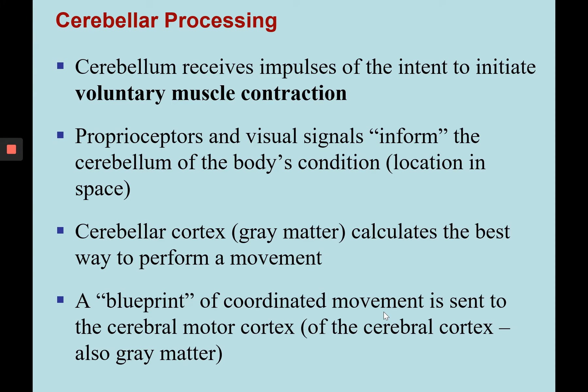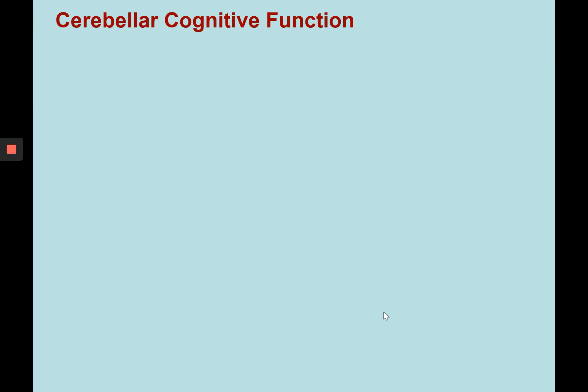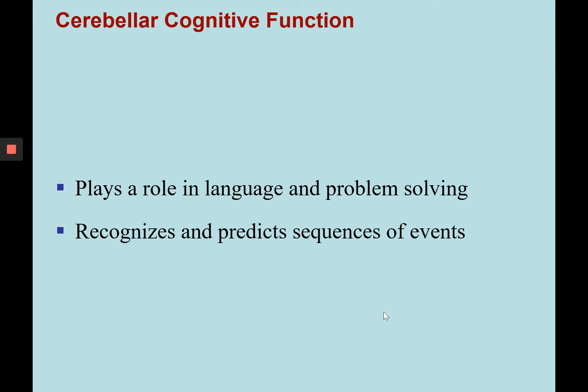Here we're going to briefly talk about cerebellar processing. The cerebellum receives impulses of the intent to initiate voluntary muscle contraction. Voluntary muscle contraction must follow a blueprint of coordinated movement sent to the cerebromotor cortex from the premotor cortex or primary motor cortex. The cerebellar cortex is gray matter located superficially to the deep cerebellar white matter, and this part is able to calculate the best way to perform a movement. The cerebellum also plays a role in language, problem solving, and recognizing and predicting sequences of events.